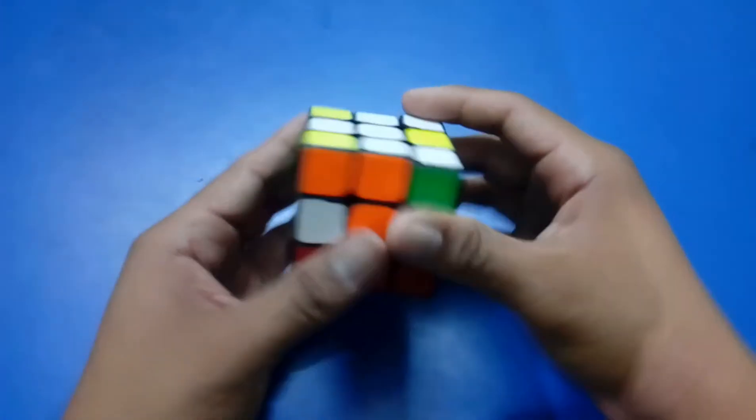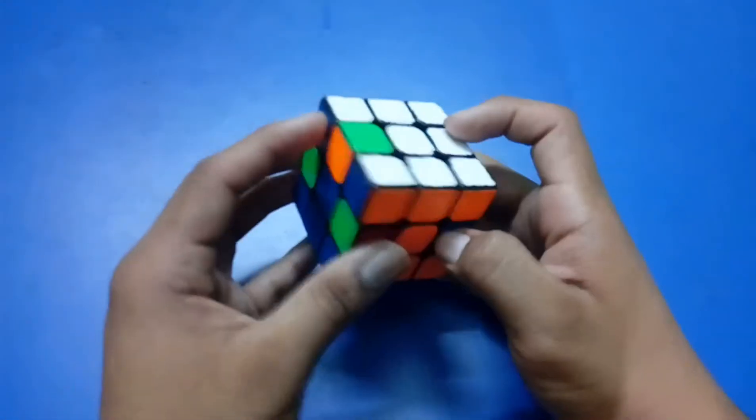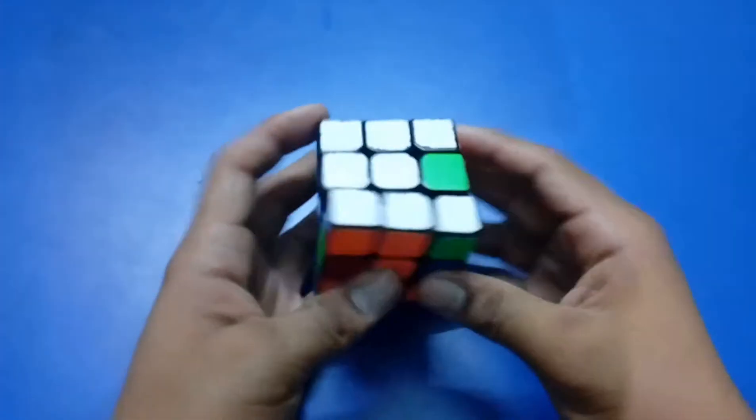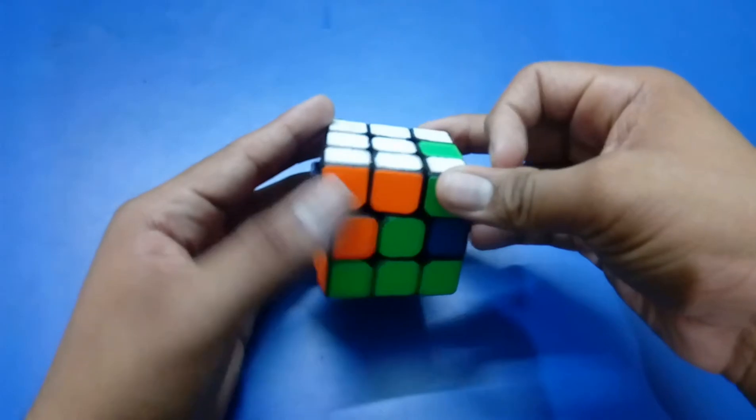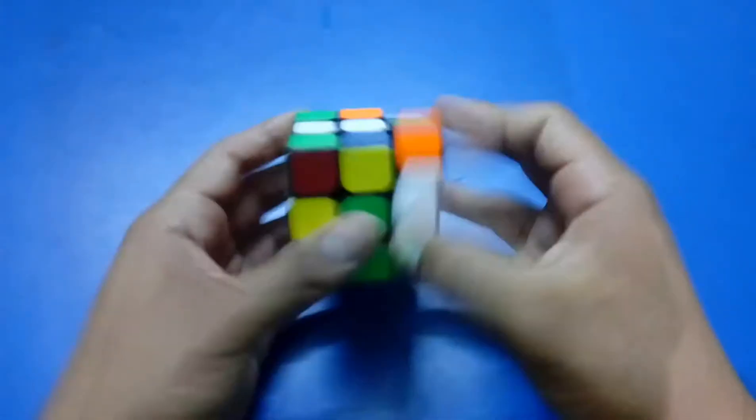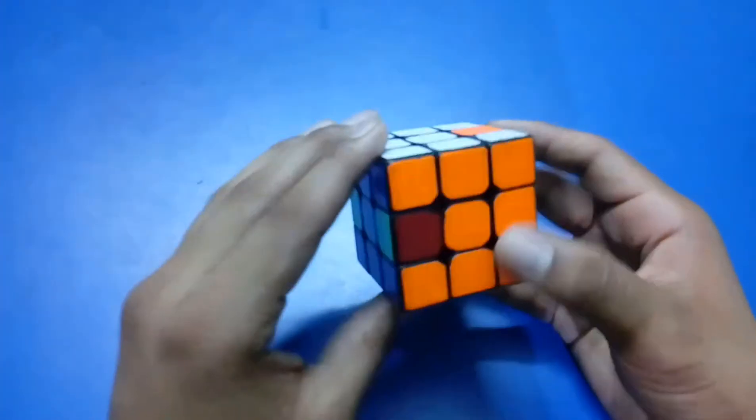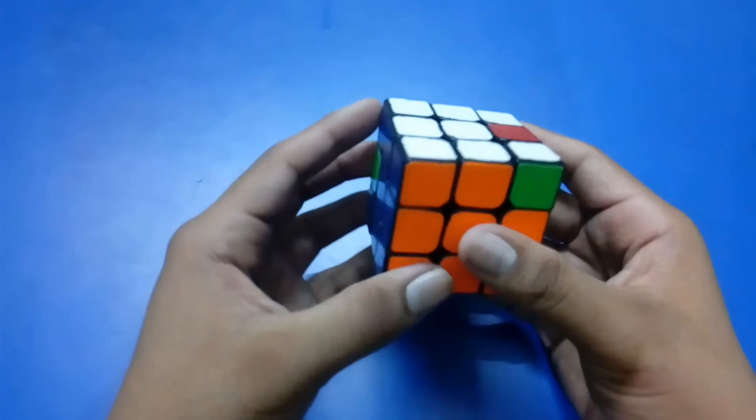Next is B, which is simply here, so it's just a T-perm away from being solved. J can be solved by doing a wide D prime and L prime, the T-perm and undo. F can be just solved by doing an L prime and doing the T-perm.